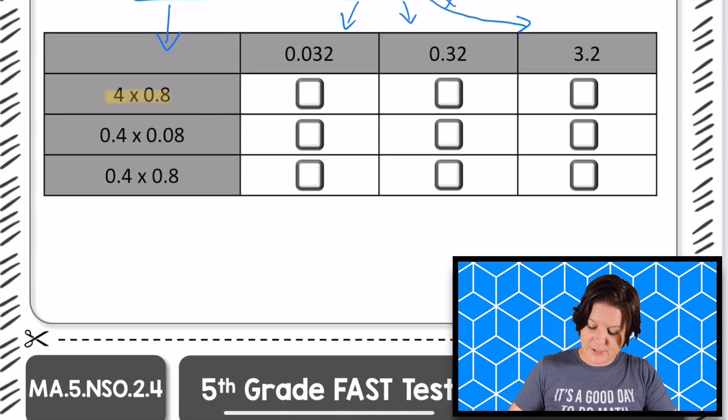I can think about this like this. I know that 4 × 8 = 32.